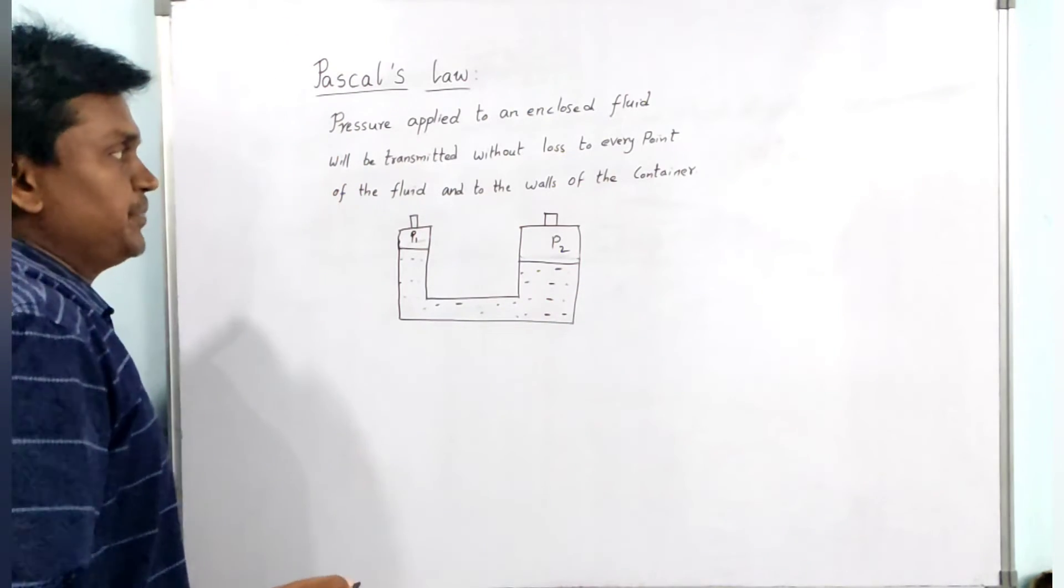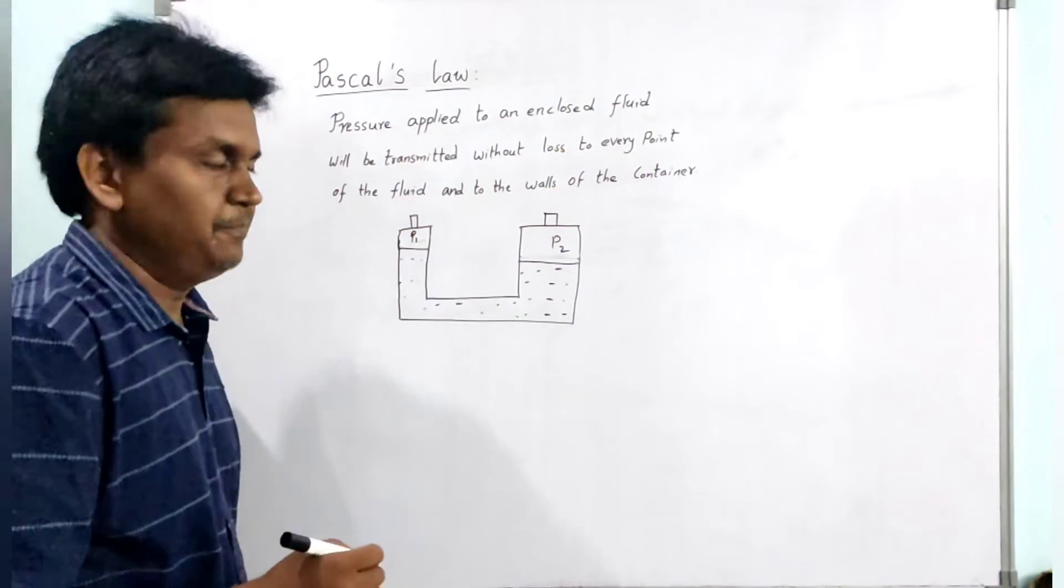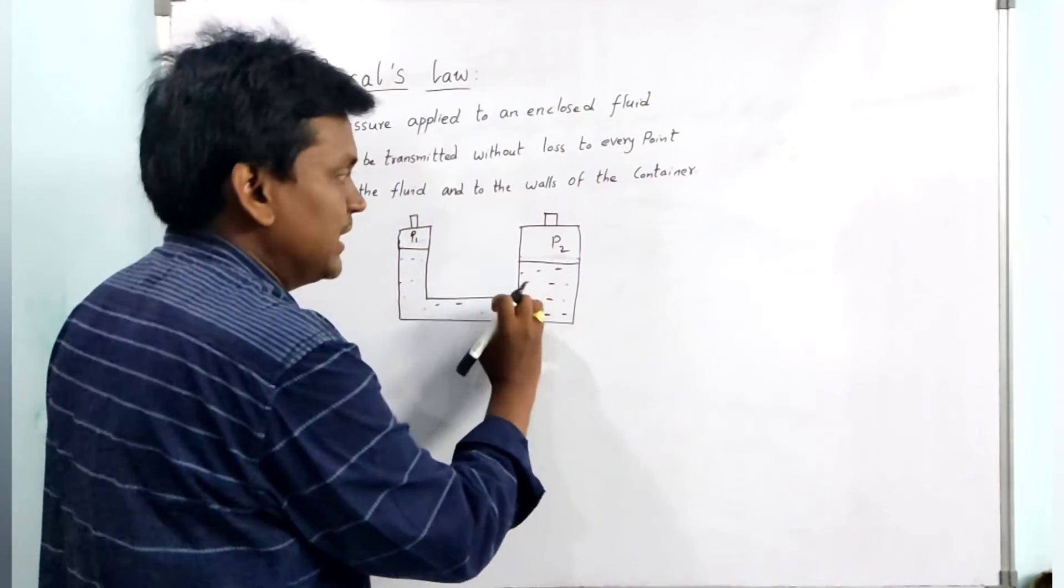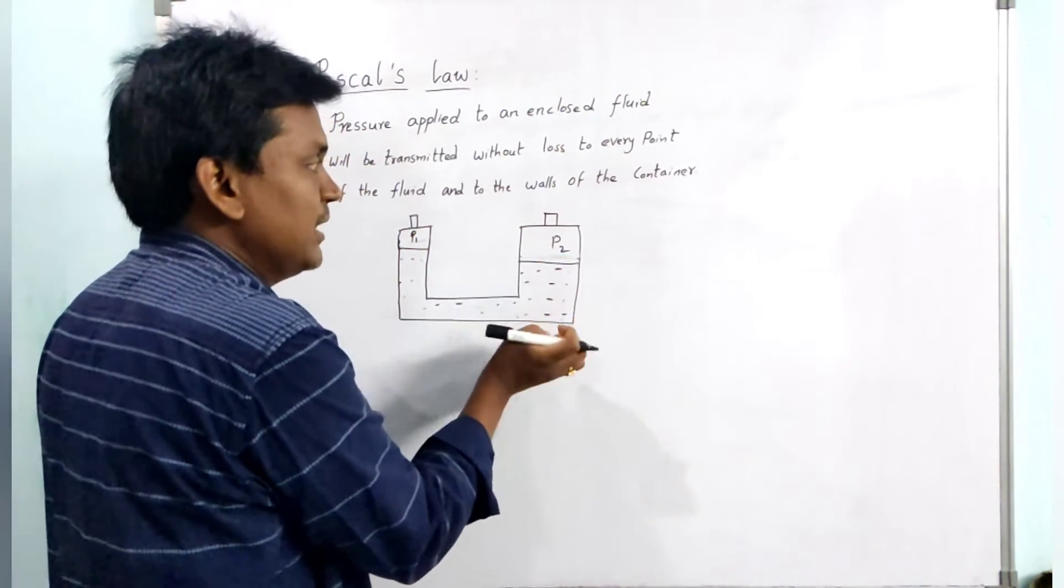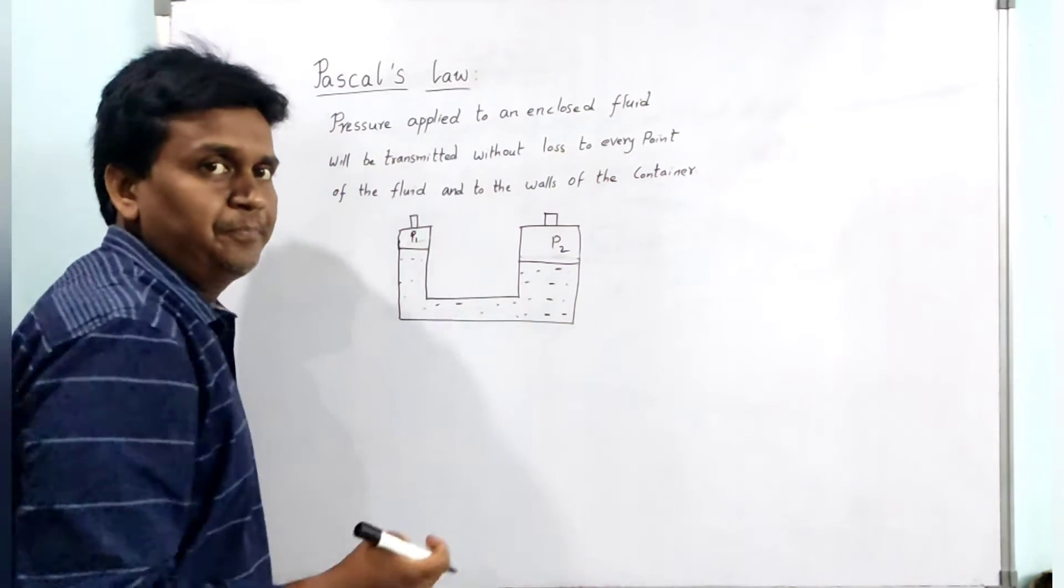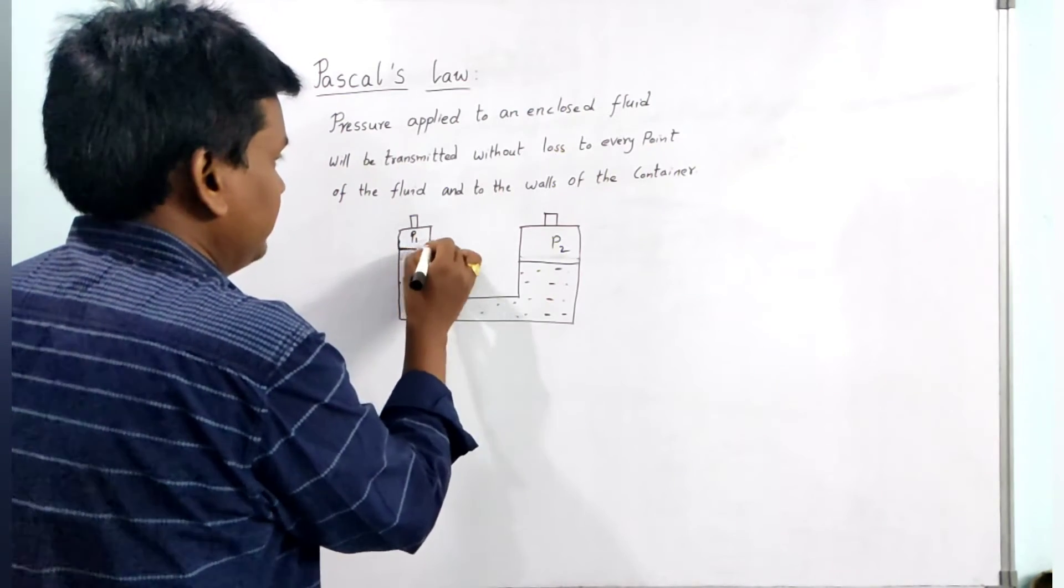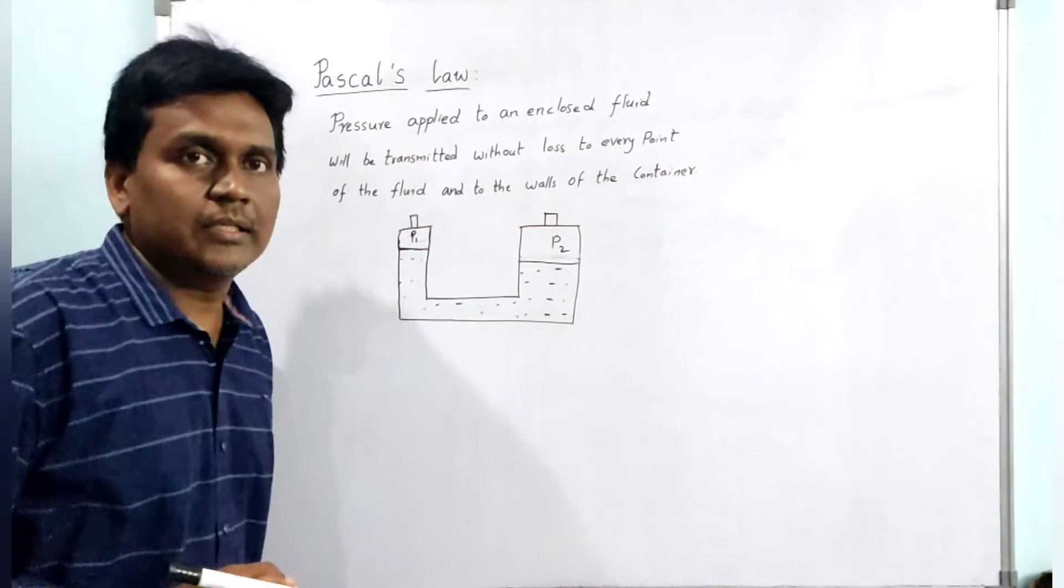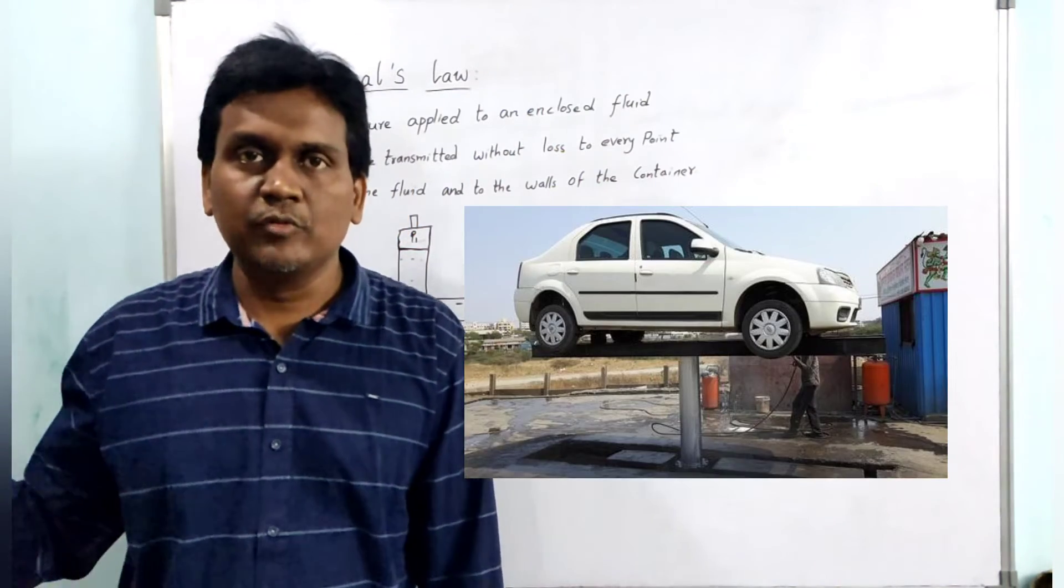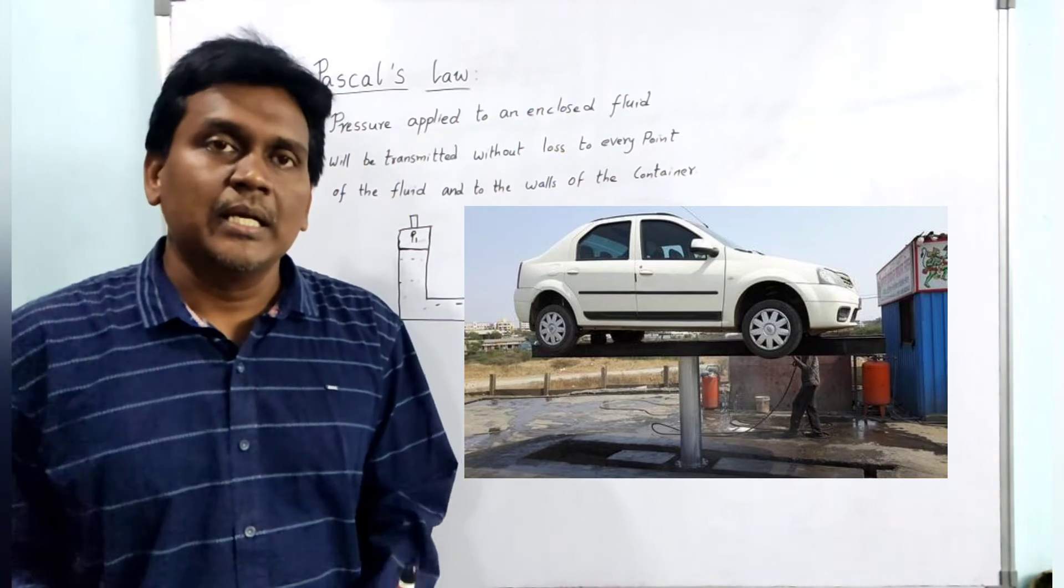If we apply some force on piston 1, that force will carry throughout the container and it will lift up piston 2 with the force. In the car wash garage, we may observe that by switching on a small switch, it is able to lift up a car.